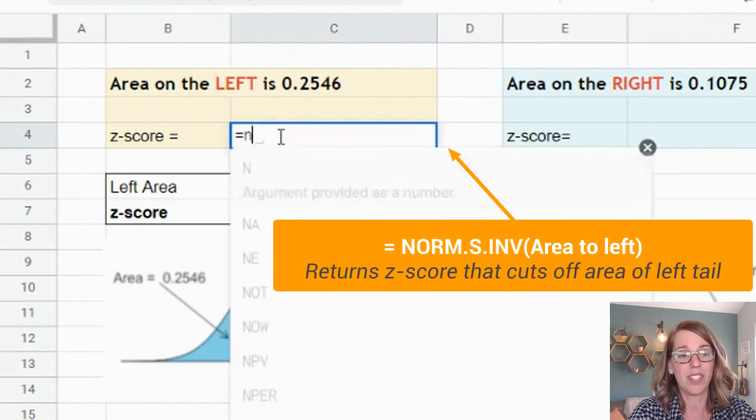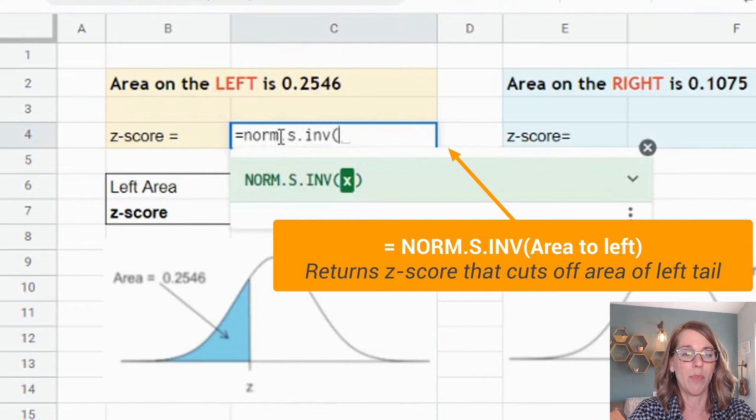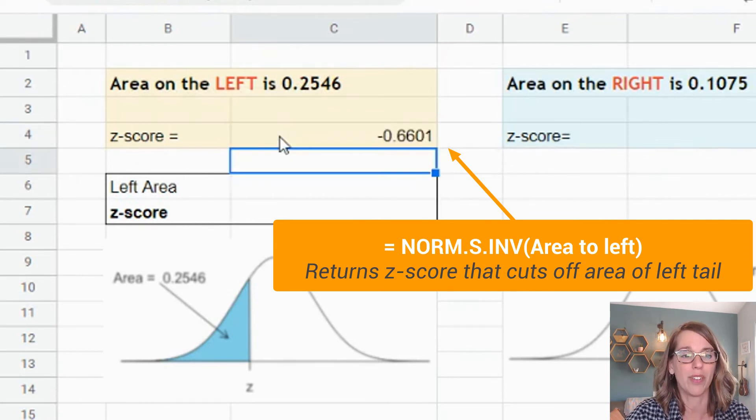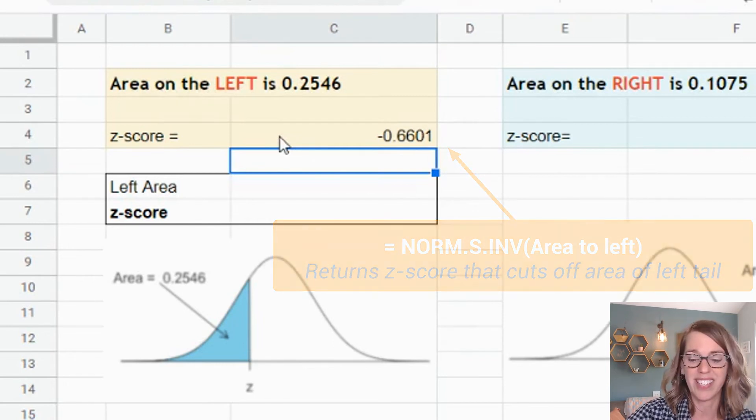I'm going to use a different formula this time, but I'm still working with my standard normal distribution. I'm going to type equals NORM.S. This time notice it pops up that INV parenthesis 0.2546. All of these functions work always from the left. If you keep that in mind, you'll be able to find what you're looking for. Sure enough, it gave me a negative z-score because I'm on the left side of zero, and I get that negative z-score of negative 0.6601.